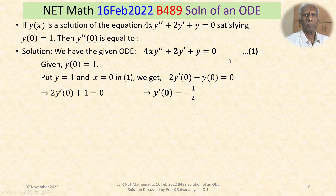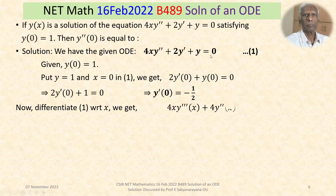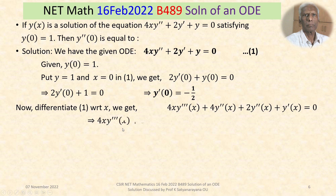Next, we differentiate the original equation (1) with respect to x. Differentiating 4x·y'' + 2y' + y = 0 gives: 4x·y''' + 4y'' + 2y'' + y' = 0. Simplifying, the terms 4y'' and 2y'' combine to give 6y'', yielding the new equation: 4x·y''' + 6y'' + y' = 0. We call this equation (2).